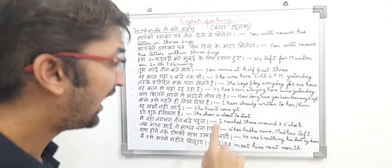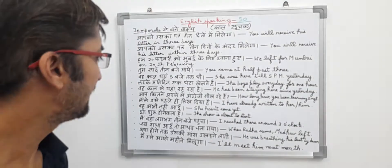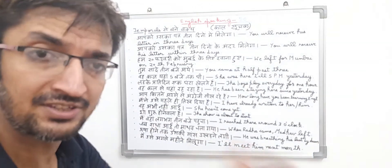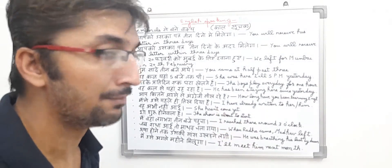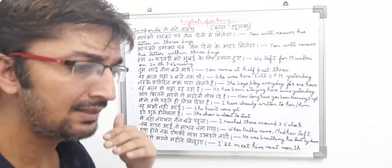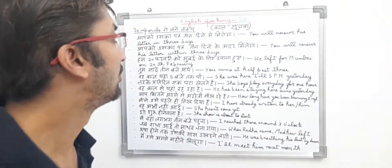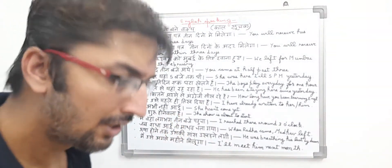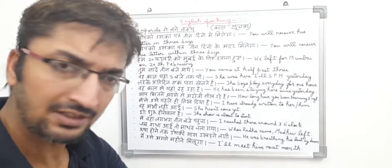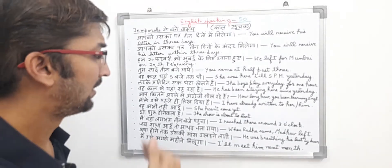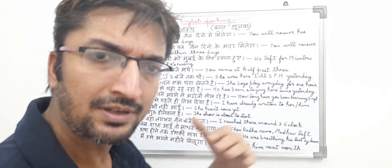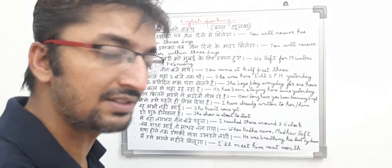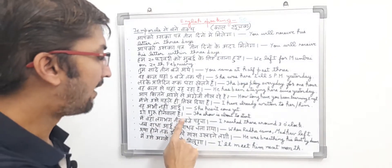Maynay usse pehle hi likh diya hai. In English: I have already written to her or him. The person is saying they have already done the work, so it is a past tense. It is a temporal type sentence because they are telling the time period — that they have already done the work. She hasn't come yet. The person is saying that the particular female person hasn't come yet, basically telling the time period within which the person has not met them.